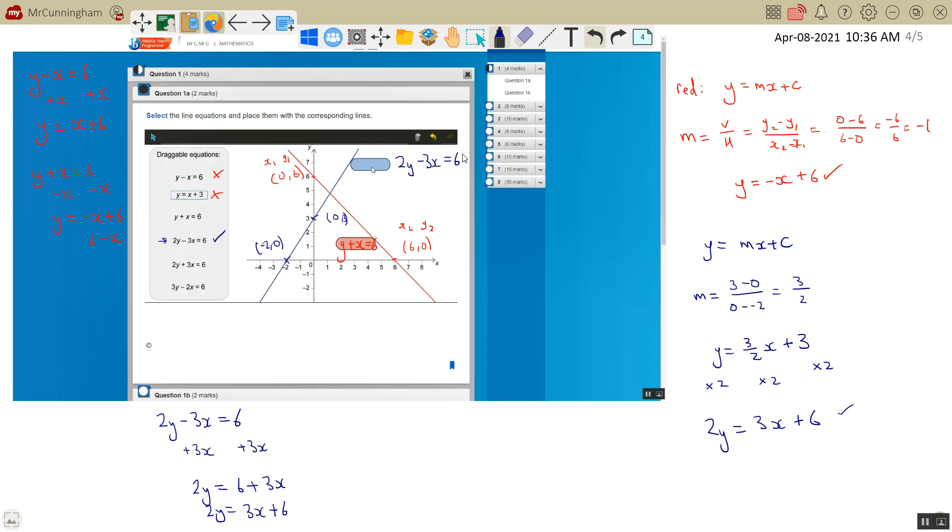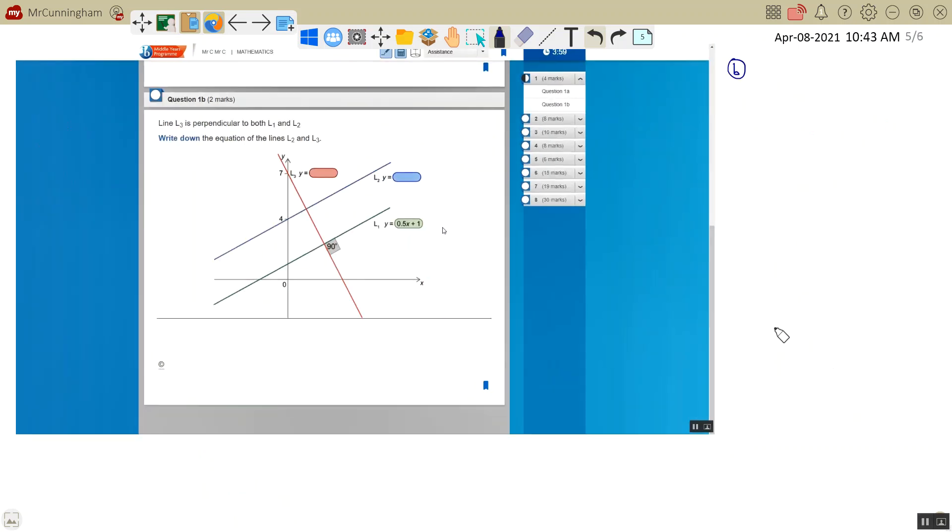A little bit of algebraic manipulation there. So it's just working out equations of straight lines and then putting them in different forms. Now this is part 1b. We've got line L3 that's perpendicular to both L1 and L2, and we have to write down the equations of L2 and L3. If L3 is perpendicular to L2 and L1, that means L2 is parallel to L1.